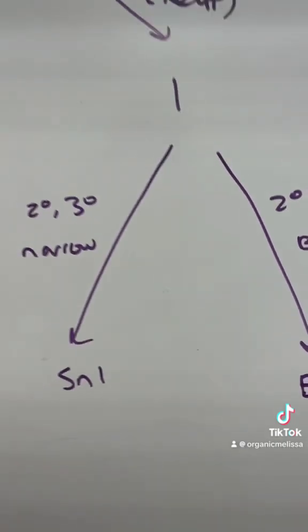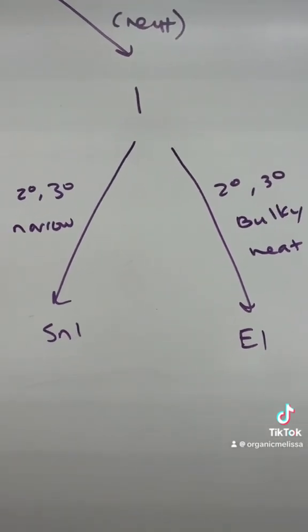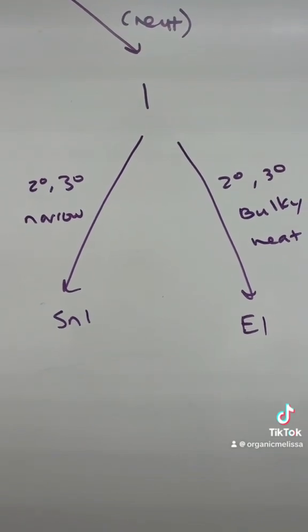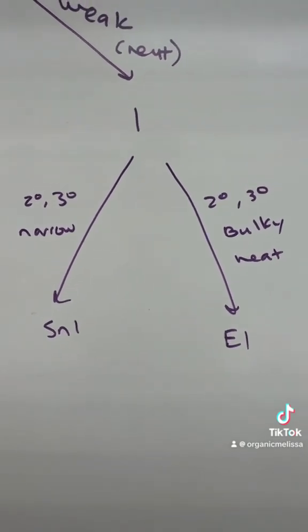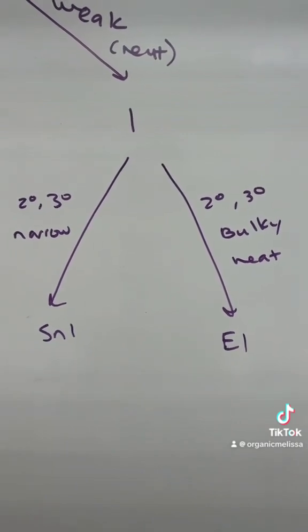SN1 and E1 are tricky because they both start with the same first step. The carbocation is formed when the leaving group leaves, so they're both favored by secondary and tertiary substrates with secondary, tertiary leaving groups.